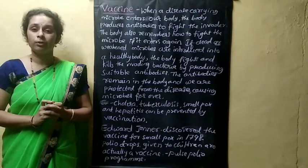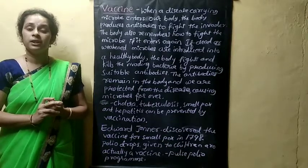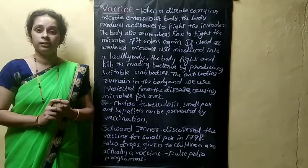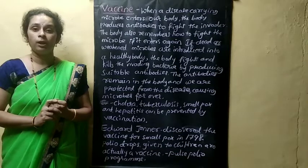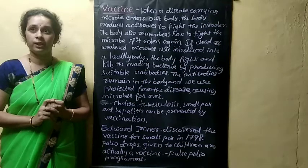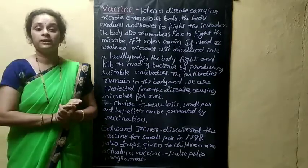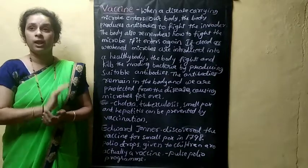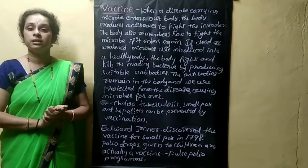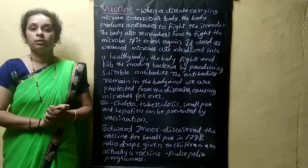Now for the activity: you have to collect information regarding Alexander Fleming as well as Edward Jenner. You have to make the activity on A4 size paper — paste a photo of Alexander Fleming and Edward Jenner, and in front of that write the information regarding each scientist. This is the activity you should do.